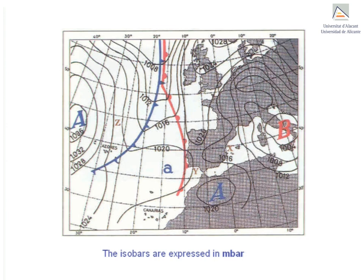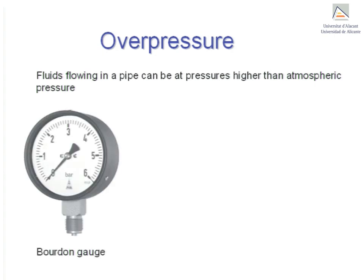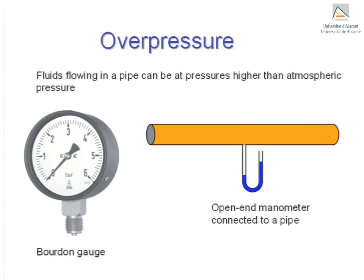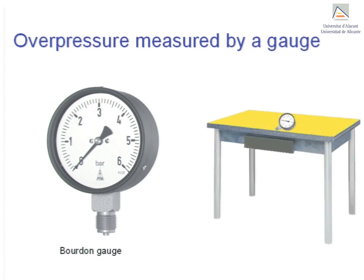Let's now turn to another type of pressure: over pressure. Fluids flowing in a pipe can have pressures that exceed atmospheric pressure. This over pressure can be measured by gauges or by manometers, and the choice of measuring device depends on the precision required. Gauge pressure is the pressure measured by a gauge — it measures pressure relative to atmospheric pressure, i.e., it is calibrated against atmospheric pressure. Therefore, a Bourdon gauge disconnected from a vessel or pipe and left loose on a table will give a zero reading. But recall that there is a column of air on top of that gauge, so there is pressure despite the zero reading. This is why gauges are said to measure over pressure.